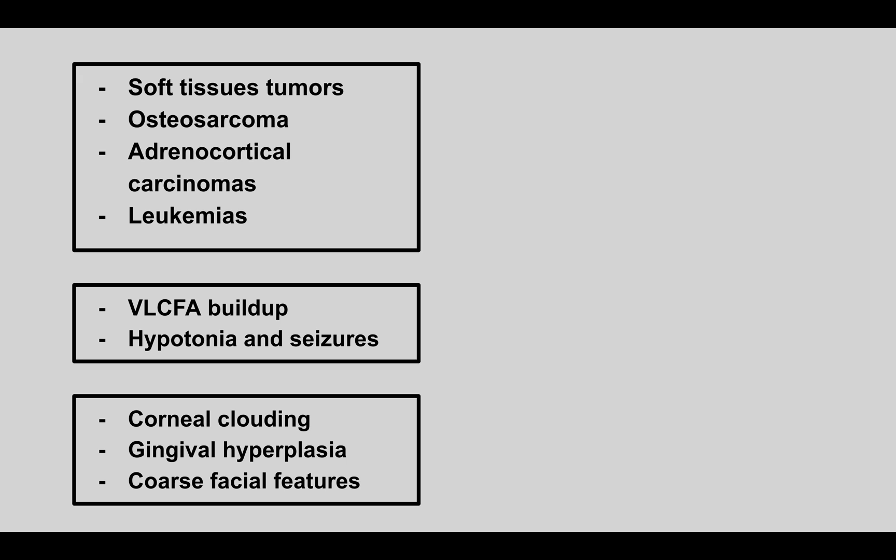The next condition involves soft tissue tumors, osteosarcomas, adrenocortical carcinomas, and leukemias. This is Li-Fraumeni syndrome — these patients develop many different tumors because of a p53 gene mutation.